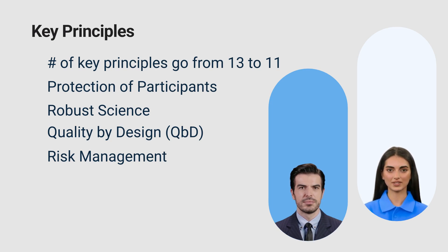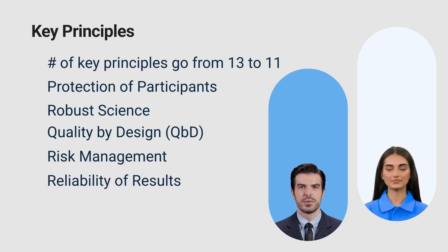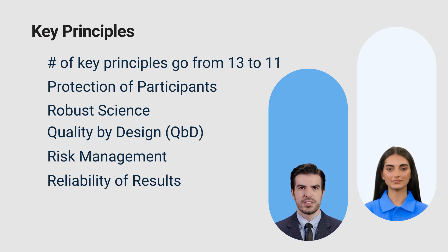The guidelines now provide more detailed strategies for managing risks effectively, such as risk-based monitoring and contingency planning. This includes a more proactive approach to risk management, where potential risks are assessed at the planning stage and continuously monitored throughout the trial. Ensuring the reliability of results is essential. The data collected during trials must be accurate and trustworthy, enabling informed decision-making. This principle reinforces the importance of data integrity and reliability, which includes data verification, validation processes, and ensuring traceability. The updated guidelines emphasize the need for robust data management systems and regular audits to ensure the integrity of trial data. By adhering to these refined key principles, we can conduct trials that are ethical, scientifically sound, and of the highest quality.